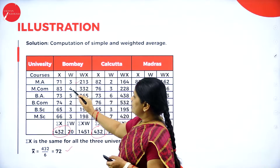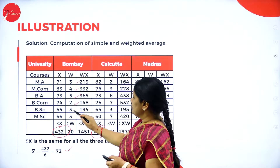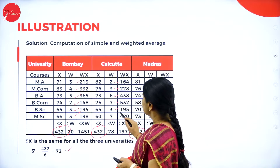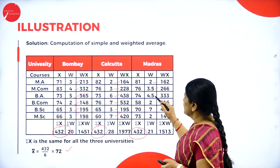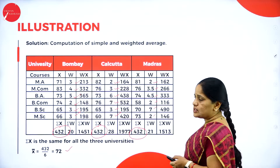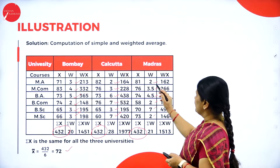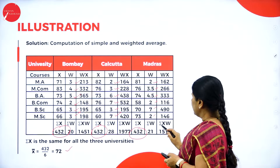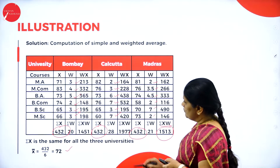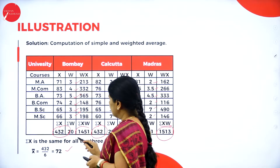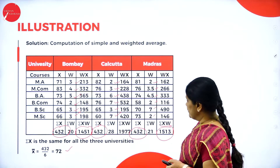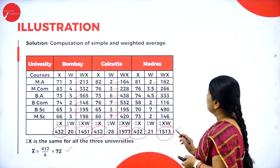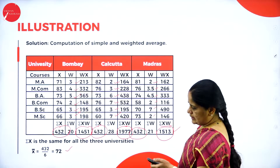When we have the weights assigned — for MA the weight is 3, MCom 4, BA 5, BCom 2, BSc and MSc similarly — we get different weights for each course. We calculate x into w (wx) and get different values. For Bombay the total of xw is 1451, for Calcutta it is 1977, and for Madras it is 1513.